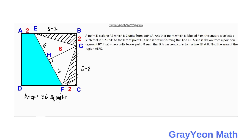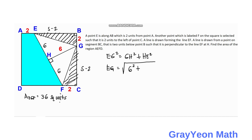We focus on triangle EGH to find the length EG. Using the Pythagorean theorem: EG-squared equals GH-squared plus HE-squared. With GH equal to 6 and HE equal to 6, EG equals the square root of 36 plus 36, which equals the square root of 72, simplifying to 6 times the square root of 2 units.